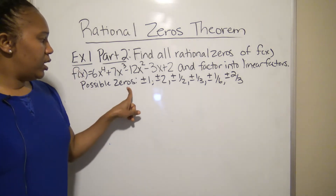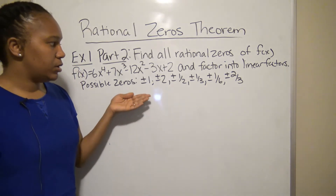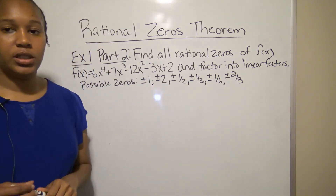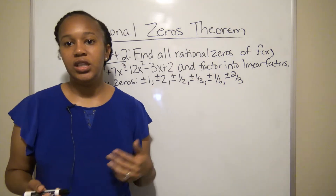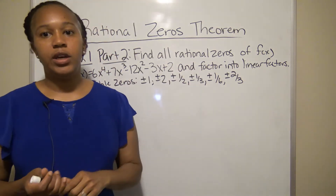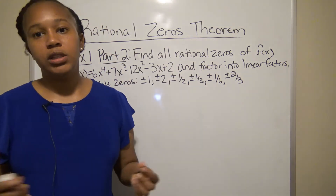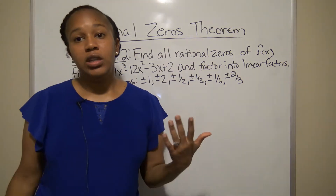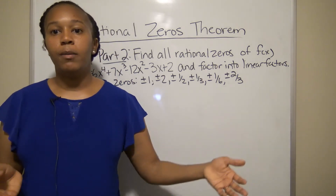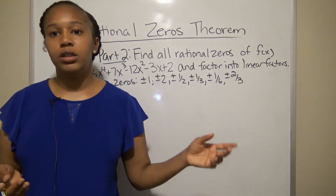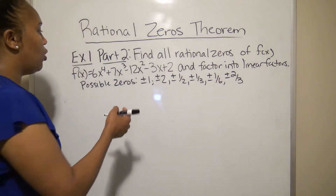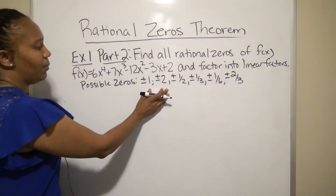We found the possible zeros in part one. I prefer synthetic division because it also tells you the remaining factors of the polynomial. I'll start with the integers, beginning with k = 1.